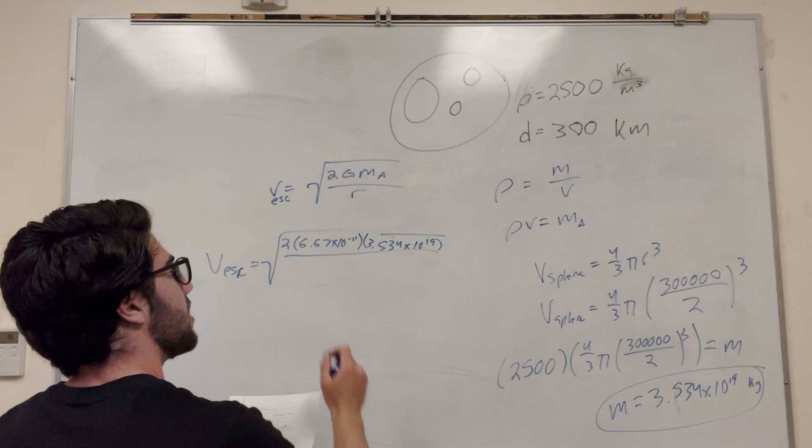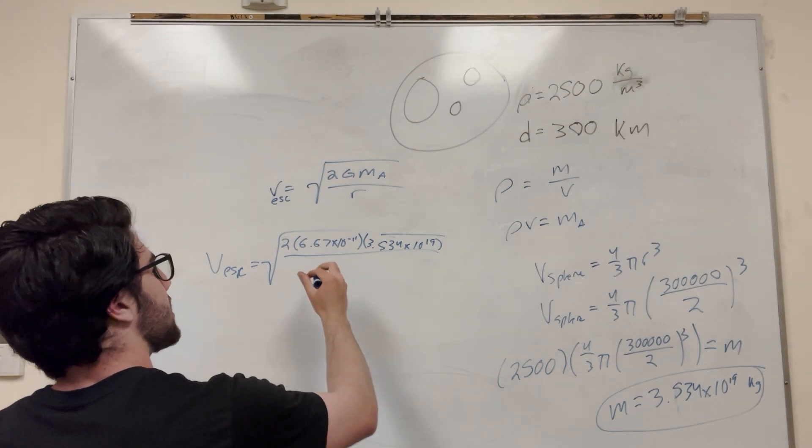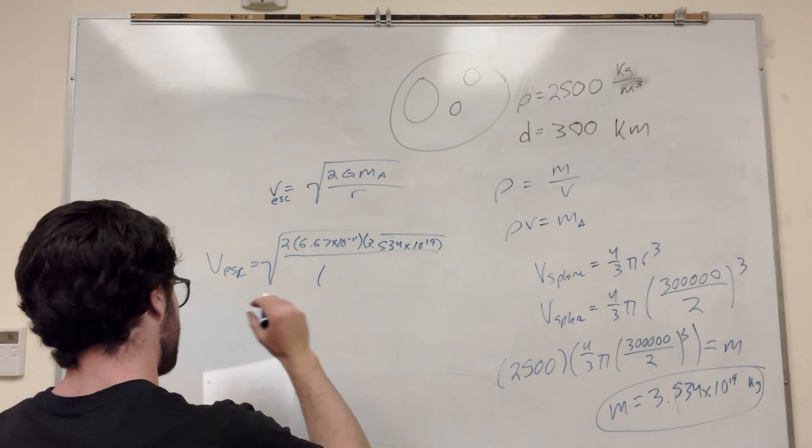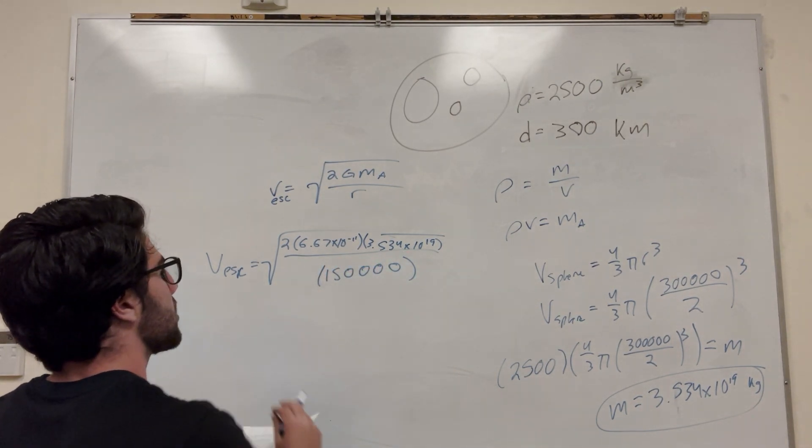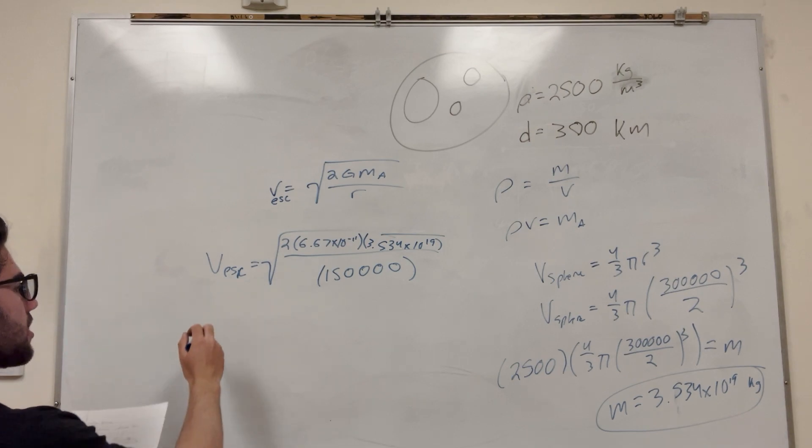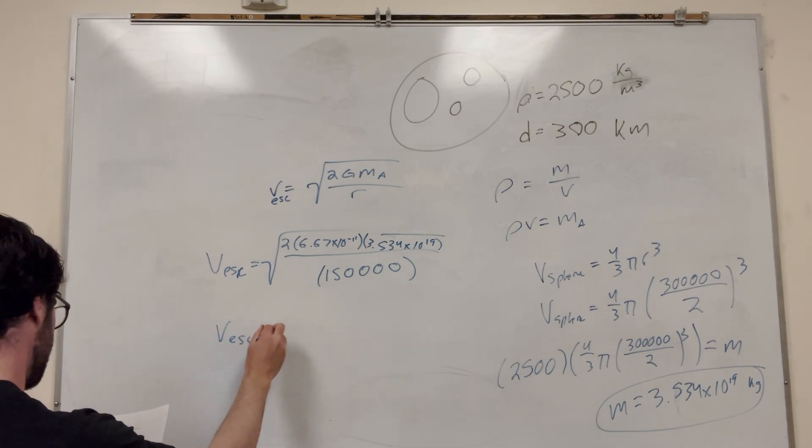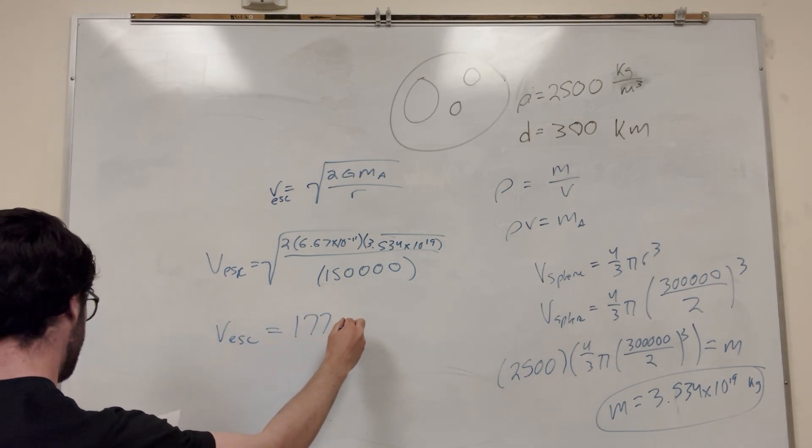What is the radius? It's 150,000. That's just diameter divided by 2 in meters. So then you calculate this, you're going to get 177 meters a second.